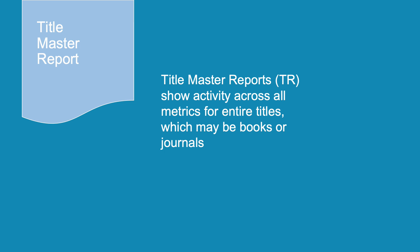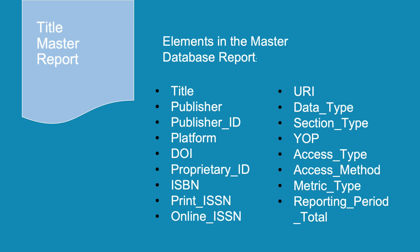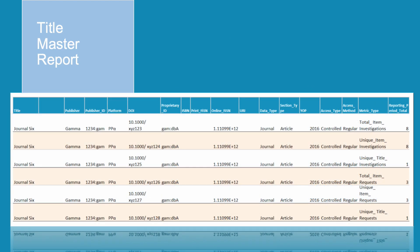Title Master Reports (TR) show activity across all metrics for entire titles, which may be books or journals. The elements in the TR are title, publisher, publisher ID, platform, DOI, proprietary ID, ISBN, print ISSN, online ISSN, URI, data type, section type, year of publication (YOP), access type, access method, metric type, and reporting period total. In this example, we can see usage of Journal 6 published by Gamma — a total of eight items have been investigated, and three item requests have been made from the journal during the reporting period.